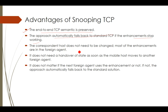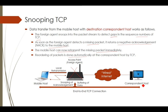The third advantage is that the correspondent host does not need to be changed. Most of the enhancements are in the foreign agent only. We give the enhancements of Snooping TCP only to the access point. The correspondent host does not know it is being snooped — it simply sends packets thinking it is directly connected to the mobile host.